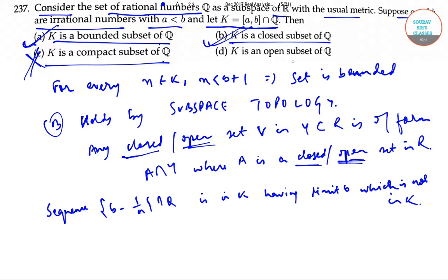Option d: K is an open subset of Q. This is correct by option b, as a and b are irrationals. So K equals (a, b) intersection Q. So d is again correct.